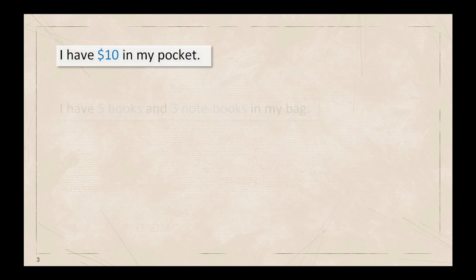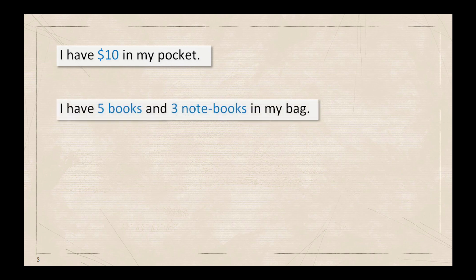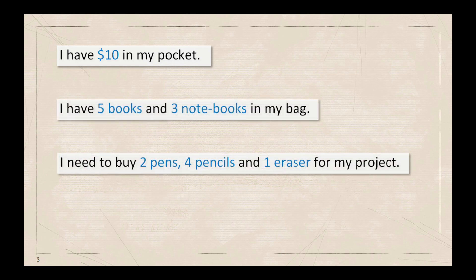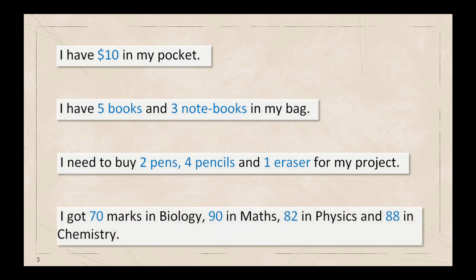In our daily lives we use sentences to communicate information. Following are a few examples of sentences to express quantities: 'I have ten dollars in my pocket.' 'I have five books and three notebooks in my bag.' 'I need to buy two pens, four pencils and one eraser for my project.' Or 'I got 70 marks in biology, 90 in mathematics, 82 in physics and 88 in chemistry.' As you can see, when the information is about quantities and as the number of items increases, the sentences become longer and complex.